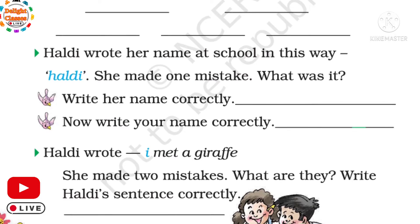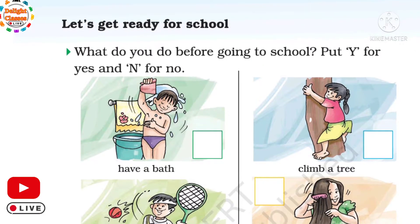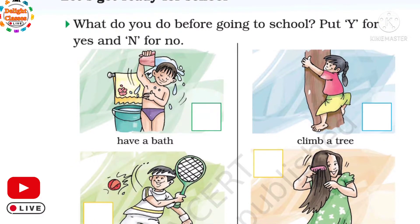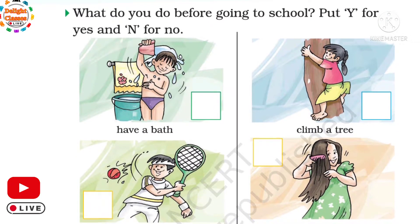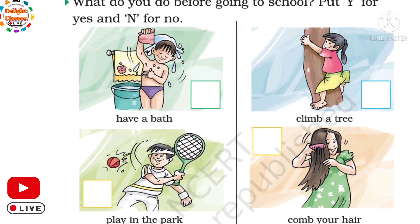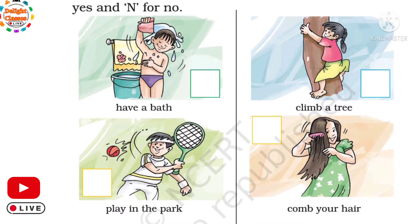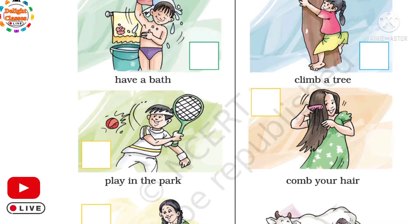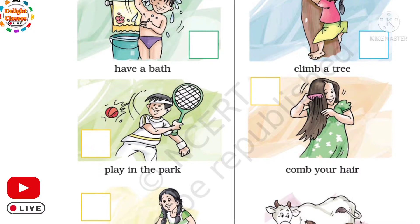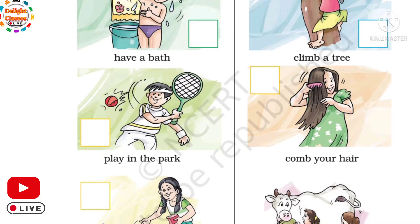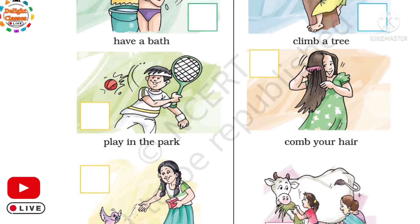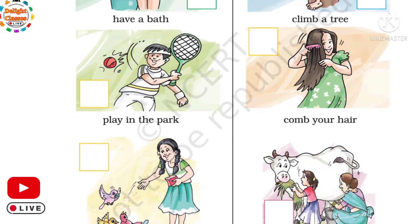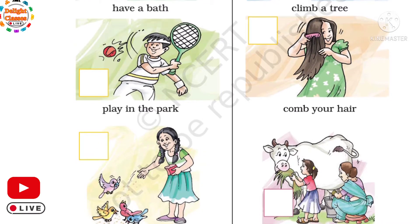Now children, come to page number 14. What do you do before going to school? Put Y for yes and N for no. Have a bath — Yes. Climb a tree — No. Play in the park — No. Comb your hair — Yes. Feed the birds — No. Help to milk a cow — No.